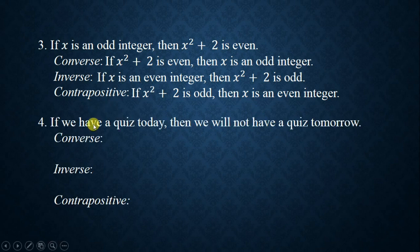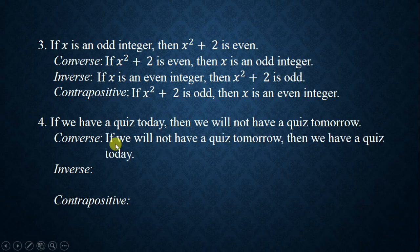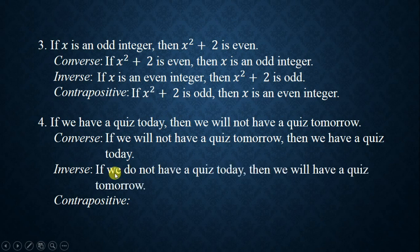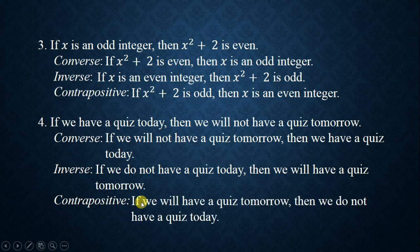And lastly: if we have a quiz today, then we will not have a quiz tomorrow. The converse is: if we will not have a quiz tomorrow, then we will have a quiz today. The inverse (not-P implies not-Q) is: if we do not have a quiz today, then we will have a quiz tomorrow. The contrapositive (not-Q implies not-P) is: if we will have a quiz tomorrow, then we do not have a quiz today.